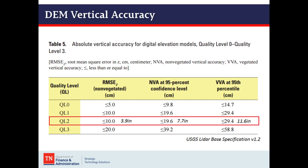Here we have the digital elevation model vertical accuracy table from the base specifications. The root mean square error and the non-vegetated at 95% are the same — 3.9 and 7.7 inches. But they've added a vegetated vertical accuracy for areas with high vegetation, and that goes all the way up to 11.6 inches, so you can see the negative effect that vegetation has on accuracy.